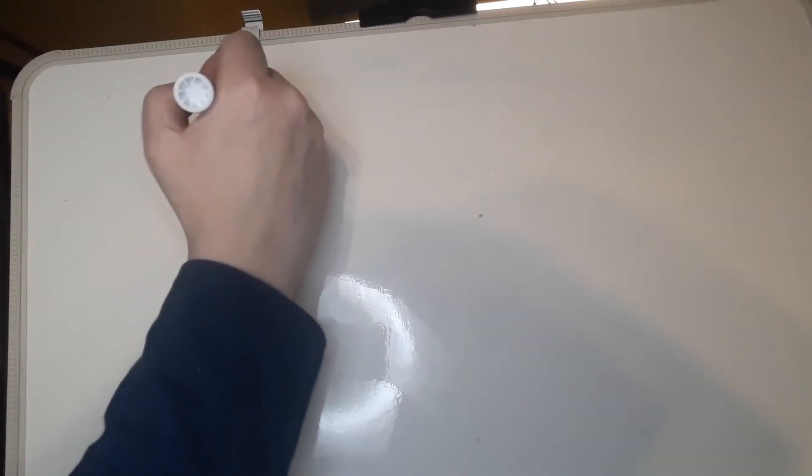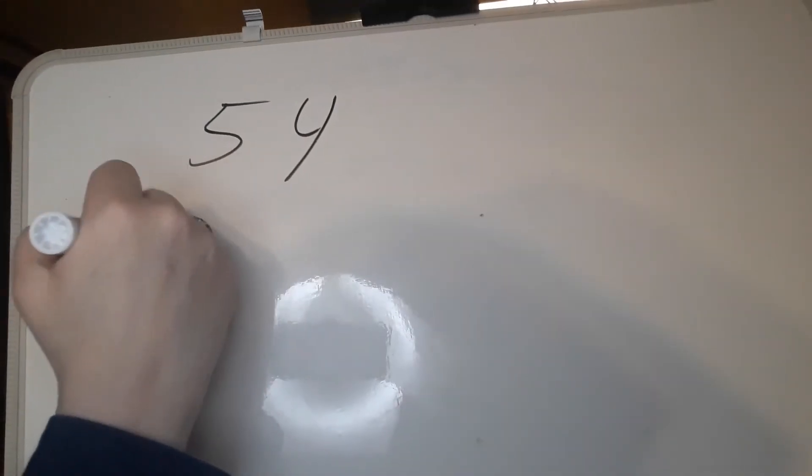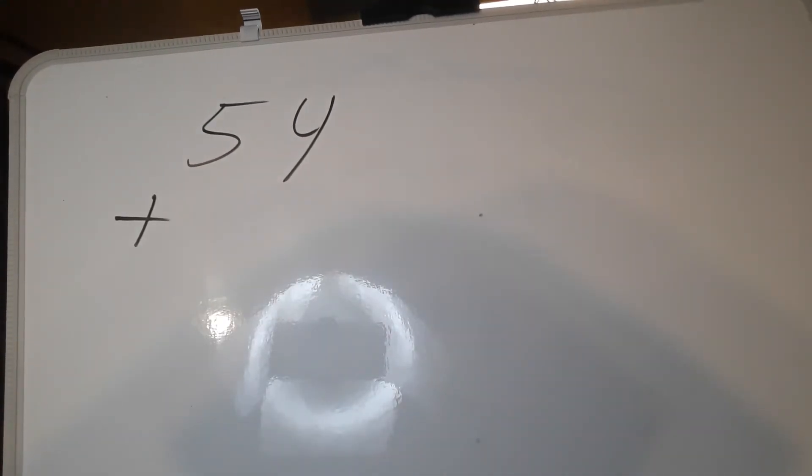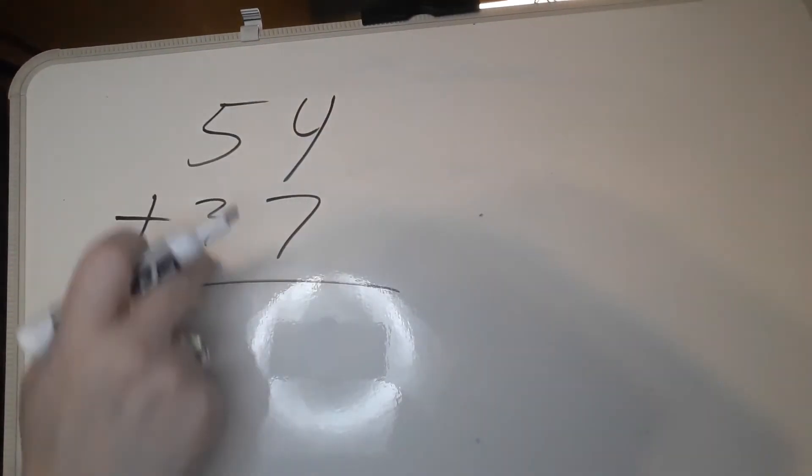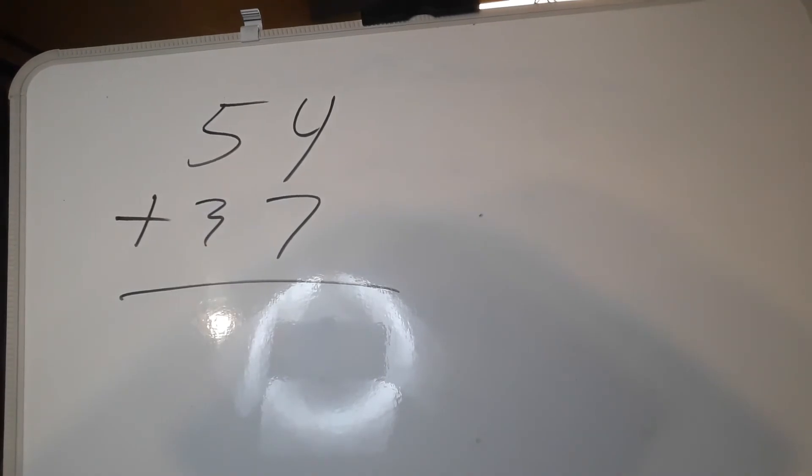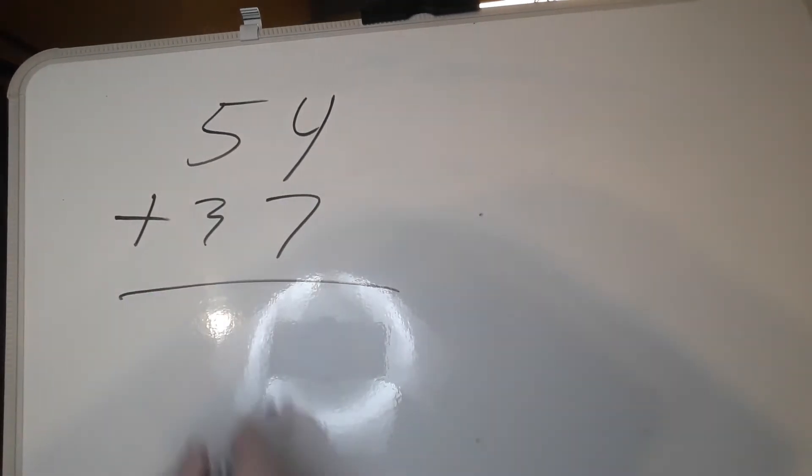One more example. 54 plus 37. 54 plus 30 is 84, plus 7 is 91.